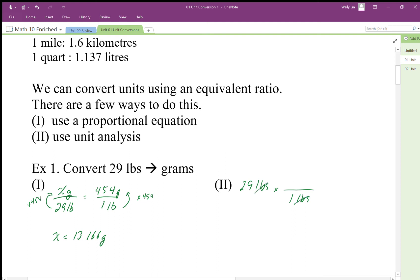Then we have the 454 grams. We can see that's our multiplier, so it looks very consistent. We end up with 29 pounds times 454 grams. We get the same thing.